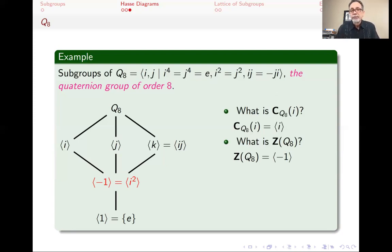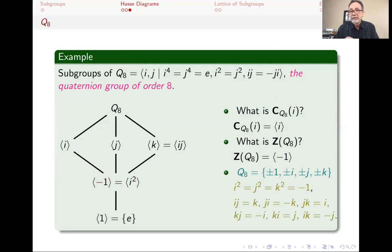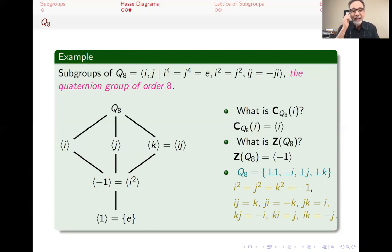Of course, Q8 is a small enough group that you could work directly with its eight elements — {±1, ±i, ±j, ±k} — where I², J², K² all equal -1 and I, J, K multiply like cross products: IJ = K, JI = -K, JK = I, KI = J. You could answer all your questions directly. But this was a proof of concept: if you know things about the subgroup structure, you can assist your work and gain information without calculations.